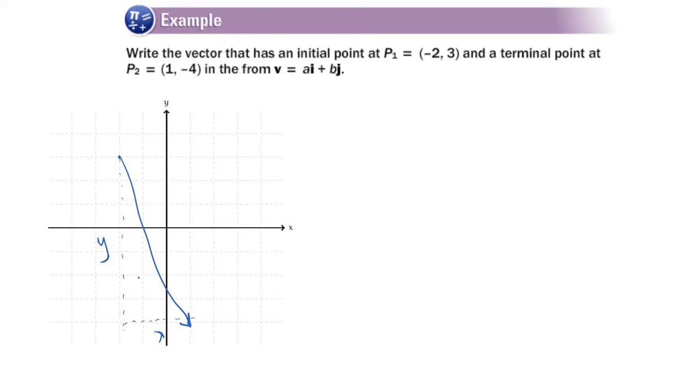So what is this doing in the i direction? Well, it went three units. So my vector, I'm going to do the arrow above it because you can't see that it's bold when I write it, is 3i. From negative 2 to 1, that's 3.